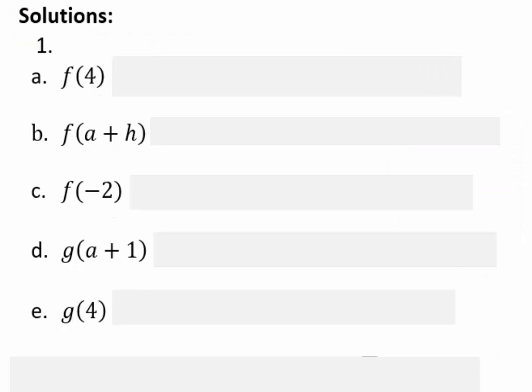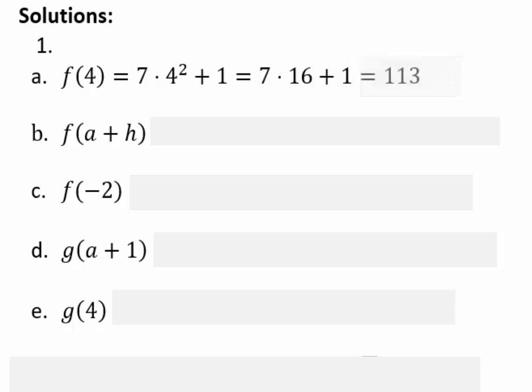Assuming you have come back, let's see if my answers match your answers. f of 4: replace x with 4 in the f function. Remember, f is the name of the function, 4 is the input, and the output would be 7 times 4 squared plus 1, which gives you 7 times 16 plus 1, or 113. For f of a plus h, instead of 4, we are going to substitute a plus h, so you'll have 7 times (a plus h) bracket squared plus 1. You can multiply out a plus h times a plus h for further simplification.